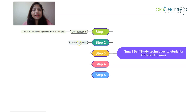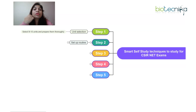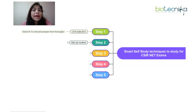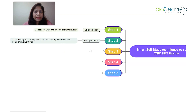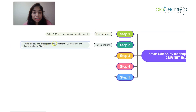Once unit selection is done, the next step is to set up a routine. Preparing a timetable is very important. It is not only important when you go to school or college — it is also important for self-study so that you can prepare well and are not giving emphasis only to one topic. This makes sure that your study sessions are properly organized.